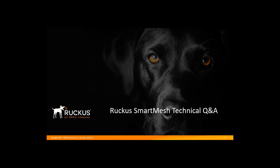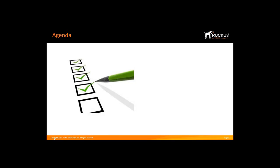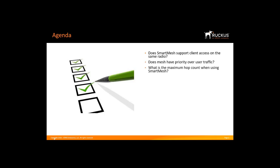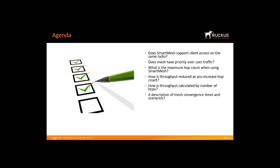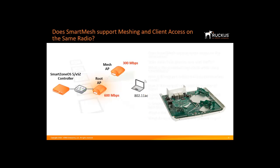This video series will cover some of the common questions asked about Ruckus Smart Mesh. In this training we'll cover the following topics: does smart mesh support client access on the same radio, does mesh have priority over user traffic, what is the maximum hop count when using smart mesh, how is throughput reduced as you increase hop count, and what is the typical time for mesh selection and how do we identify and prevent loops.